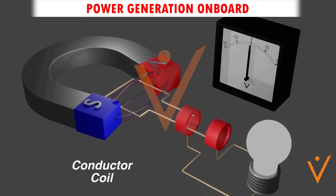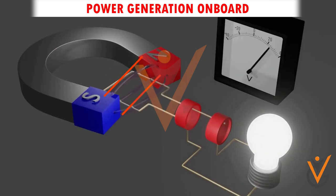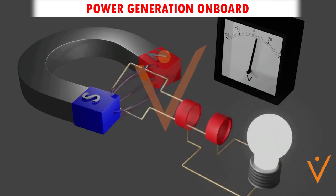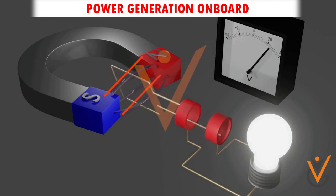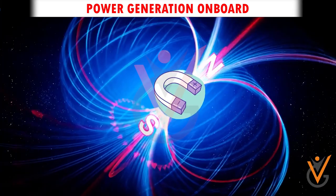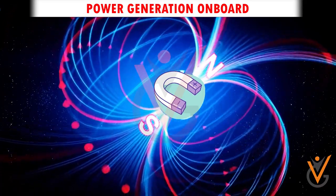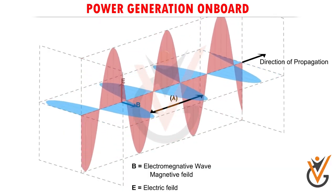Electric generators work on the principle of electromagnetic induction. A conductor coil, or copper coil tightly wound onto a metal core, is rotated rapidly between the poles of a horseshoe-type magnet. When the coil rotates, it cuts the magnetic field which lies between the two poles of the magnet. The magnetic field interferes with the electrons in the conductor to induce the flow of electric current inside it — this is how electricity is generated.